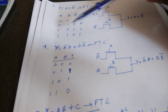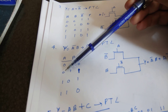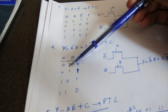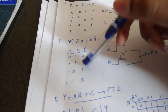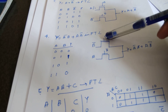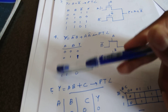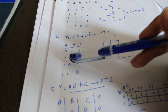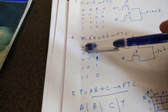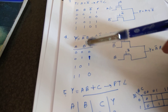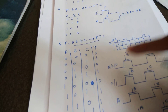Now the next problem: Y equal to A complement B plus AB complement in PTL. We know the logic of this is 0, 1, 1, 0 — this is an XOR-type function. When A is given as 1, the complement of B is obtained as output, so we write B complement. When A complement is given, what is given as B is obtained as output, so B is given. It's very simple — that's how we implement this using PTL.